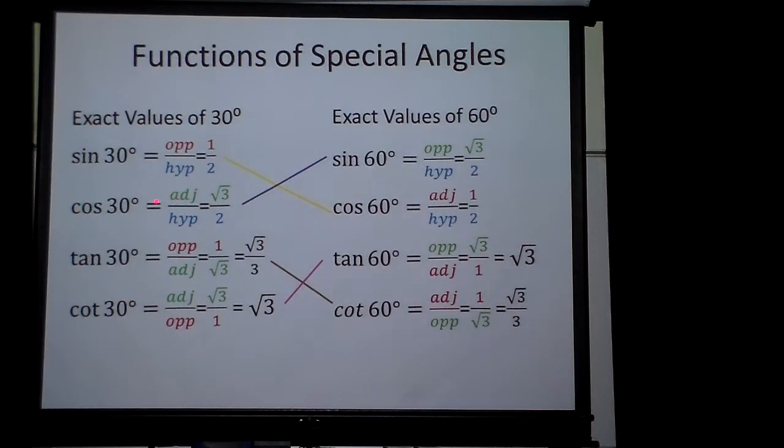And the same thing here, the adjacent of the 30 degree cosine angle is the opposite for the 60 degree angle, so that's why the sine of 60 and the cosine of 30 have the same answers. And the same is going to be true for tangent of 30 cotangent of 60 and tangent of 60 cotangent of 30.